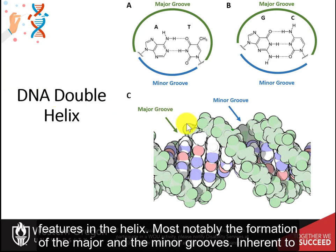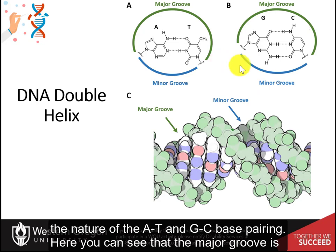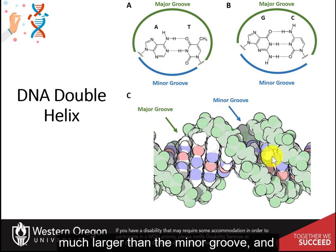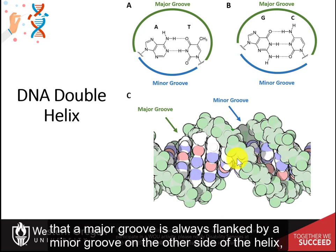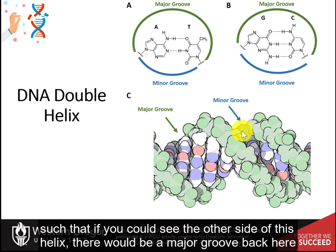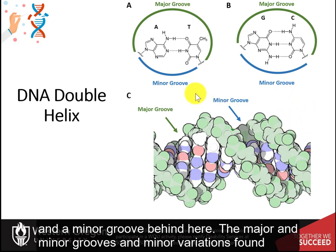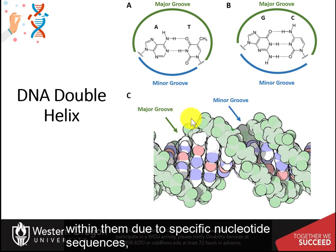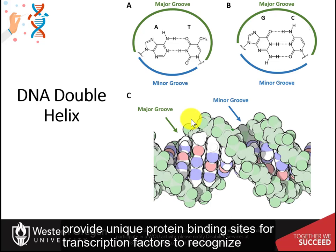The structural elements of the DNA double helix form repeating three-dimensional features, most notably the major and minor grooves, inherent to the nature of the AT and GC base pairing. The major groove is much larger than the minor groove, and a major groove is always flanked by a minor groove on the other side of the helix. The major and minor grooves, and minor variations found within them due to specific nucleotide sequences, provide unique protein binding sites for transcription factors to recognize and bind in a sequence-specific manner.